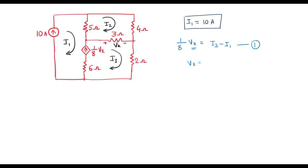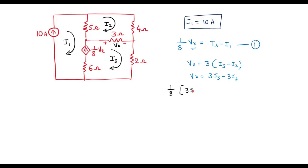Here Vx is nothing but the voltage across the 3 ohm resistor. So I can write Vx is equal to 3 into (I3 minus I2), or I can write Vx equal to 3I3 minus 3I2. I can simplify equation 1 as: 1/8 Vx, that is 1/8 of (3I3 minus 3I2), will be equal to I3 minus I1, or I can write 3/8 I3 minus 3/8 I2 equals I3 minus I1.